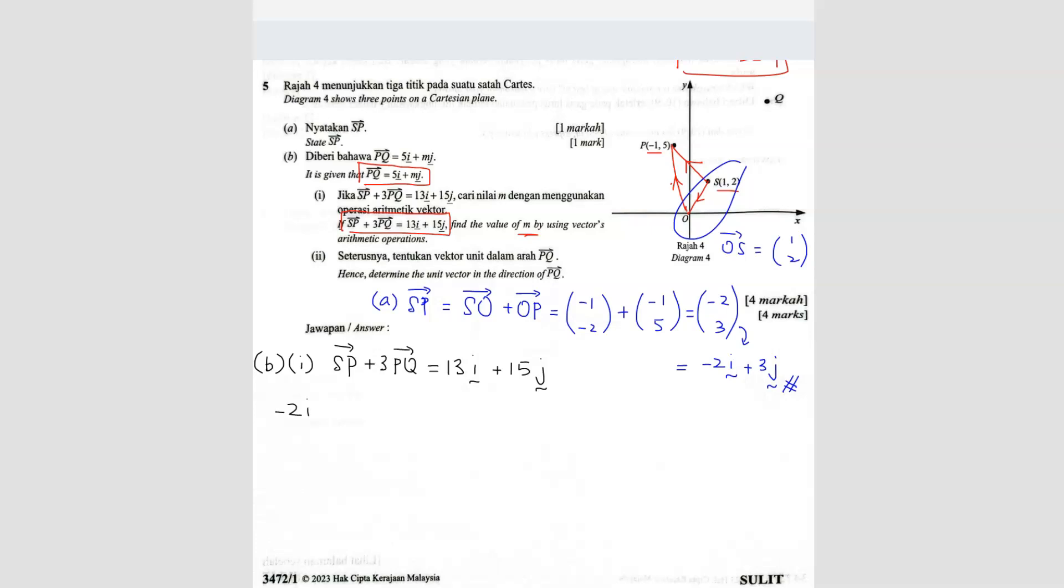So negative 2I plus 3J. So this is SP plus 3 times of PQ. PQ is 5I plus MJ equals 13I plus 15J.